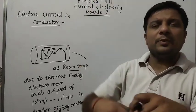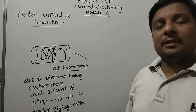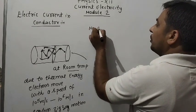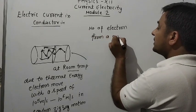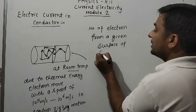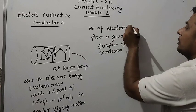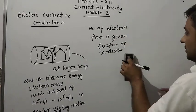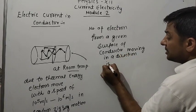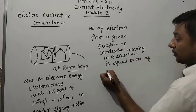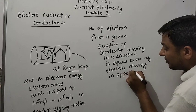At any particular instant, what we observe is that from a given surface of a conductor, the number of electrons moving in one direction is equal to the number of electrons moving in the opposite direction.